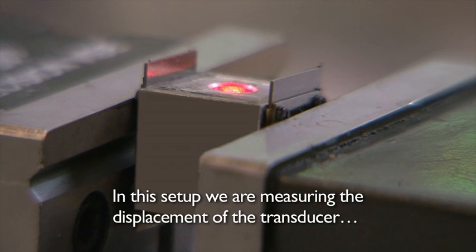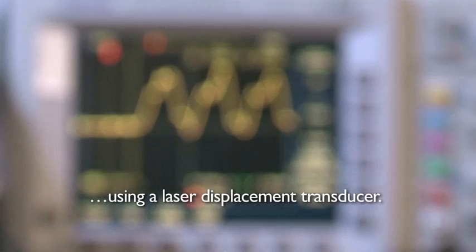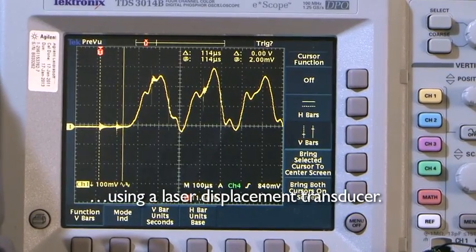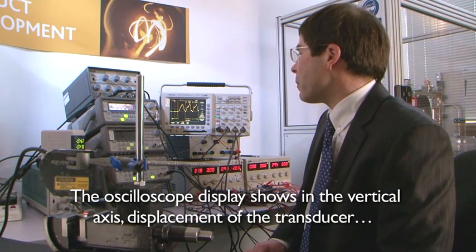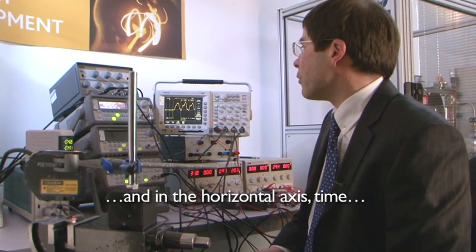In this setup, we are measuring the displacement of the transducer using a laser displacement transducer. The oscilloscope display shows displacement on the vertical axis and time on the horizontal axis.